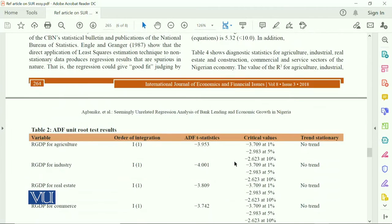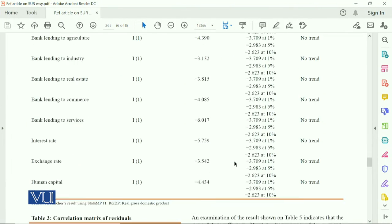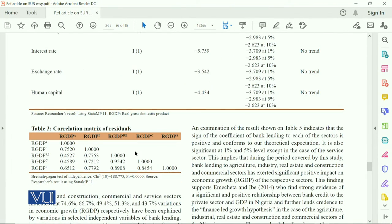As far as Table 3 is concerned, this shows the correlation metrics of the residuals. As you know, real GDP in agriculture associated with real GDP equals 1 because there is perfect correlation between any variable and itself. But when we move from section 1 to section 2, you will see 0.75.